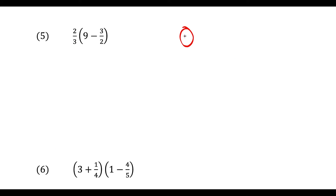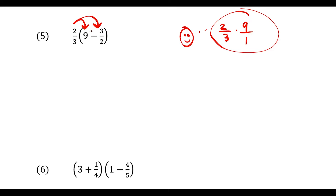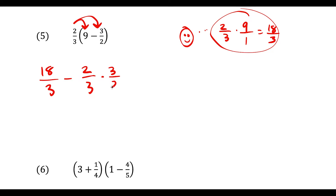Now we're going to use the distributive property. When I distribute and multiply 2/3 times 9, I think of 9 as 9/1. When you multiply fractions, the property tells us to multiply numerators and denominators, so 2 times 9 is 18 over 3. Then 2/3 times 3/2: the 2 over 2 cancels and the 3 over 3 cancels — that's one of our properties for canceling common factors — leaving 1. So we have 18/3 minus 1, which is 6 minus 1, equal to 5.